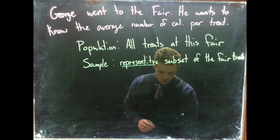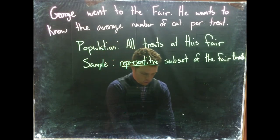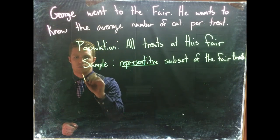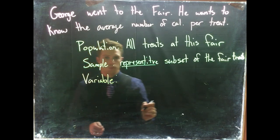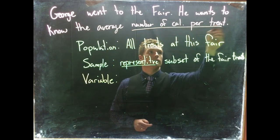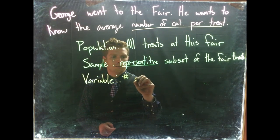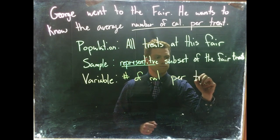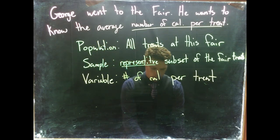So after he goes and does that, we need to know — let's go with orange — what is the variable? So the variable here would be the number of calories per treat. That's the variable that he's interested in.